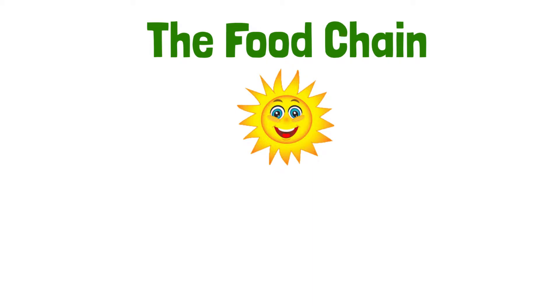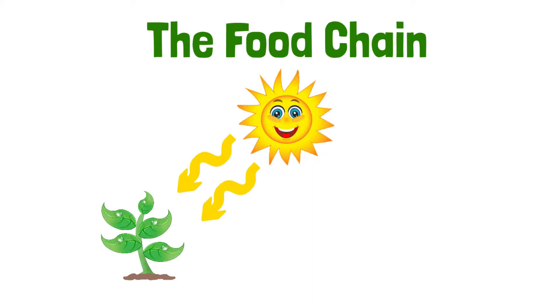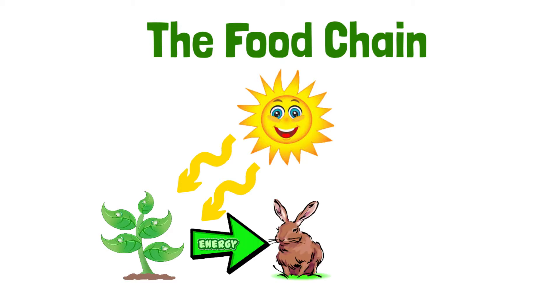Almost all energy on Earth comes from the sun. Plants, which are also called producers, use the sun's light to produce energy. When an animal consumes a plant, some of the plant's energy passes into the animal. A food chain shows the passing of this energy with arrows.